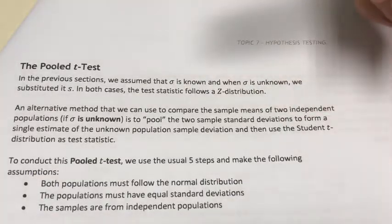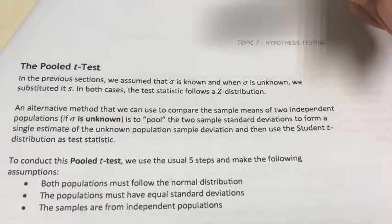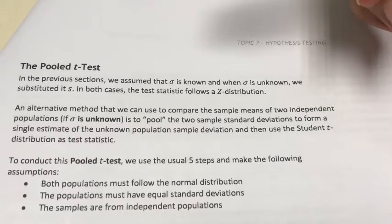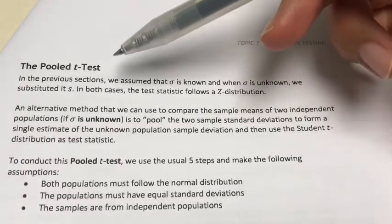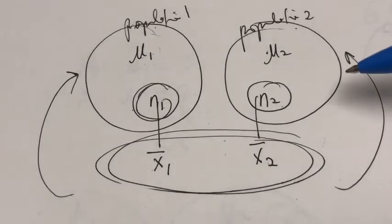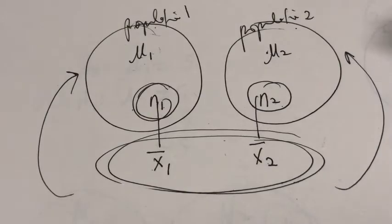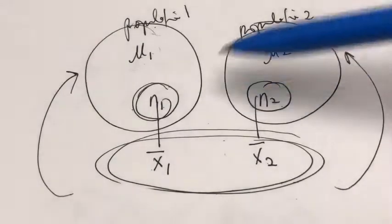Now, in the last video we've learned about hypothesis testing for two samples when both samples are large and when we know the population standard deviation. Now, what if both of our samples are small in size and that we don't know the population standard deviation? Well, this is the kind of test that we can use for those instances. I made this diagram in the last video to basically illustrate what it means by conducting a hypothesis test for two independent samples.